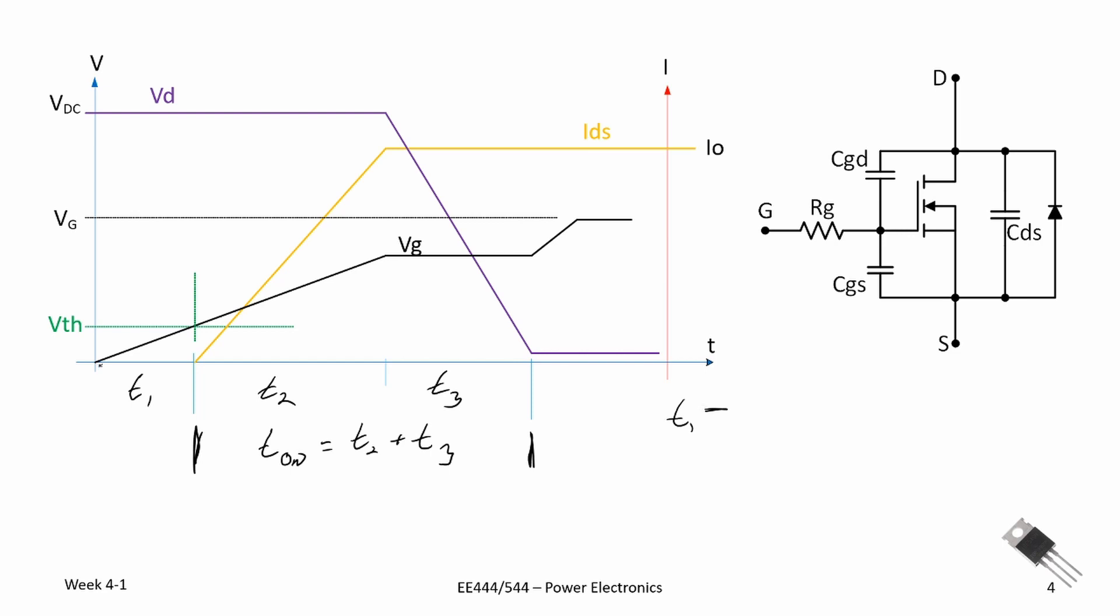T1 is the time it takes for our gate-to-source voltage to reach the threshold voltage. Once the gate-to-source voltage surpasses the threshold voltage, drain current will start to flow until the charge or the value of the voltage on the gate reaches the Miller plateau. So T2 is the time when the drain-to-source current starts to flow, reaches its maximum value, and then we reach the Miller plateau.